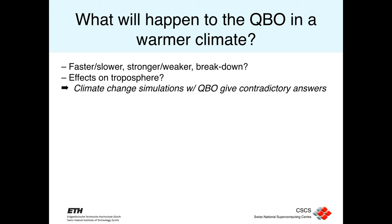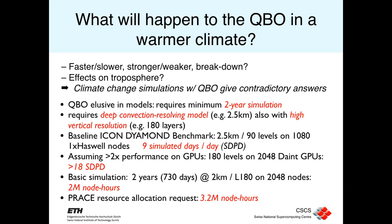Current simulations are giving contradictory answers. The project requires a two-year simulation — clearly, because it's biennial — and requires deep convection with very high vertical resolution: 180 layers at very high horizontal resolution. Based on preliminary runs, this two-year simulation is about 2 million node hours on Piz Daint, our main platform. The PRACE allocation was more than that — 3.2 million node hours in total — a very large allocation on our main platform.